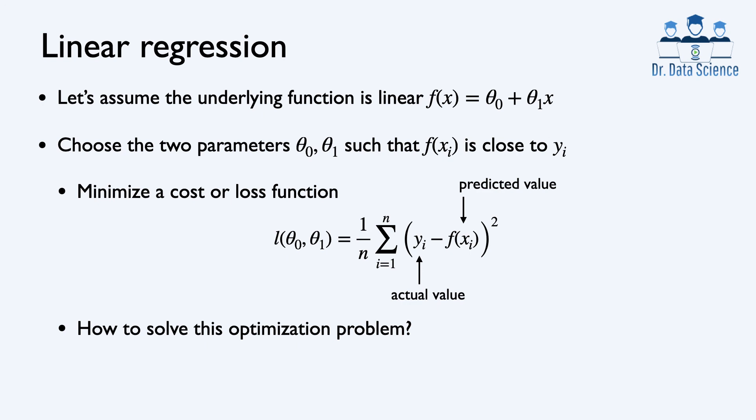To understand linear regression, let's assume the underlying function is linear. This means we have the equation of a line: theta_0 plus theta_1 times X, where theta_0 is the intercept and theta_1 is the slope. The goal is to choose parameters theta_0 and theta_1 such that the predicted values f(x_i) are as close as possible to the actual values y_1 through y_n.